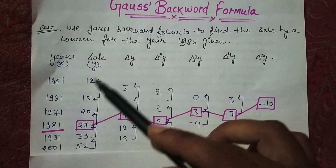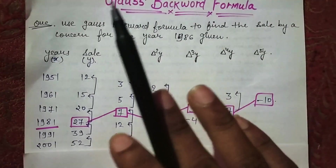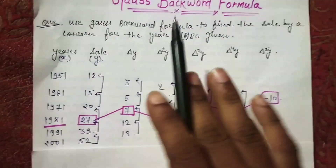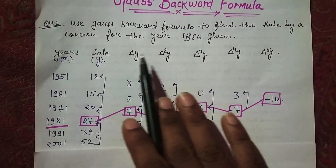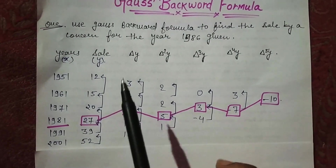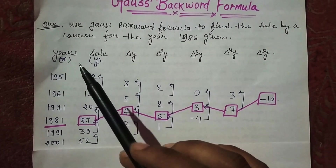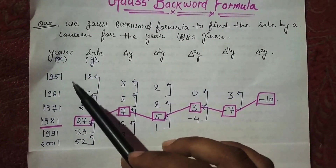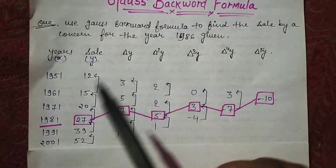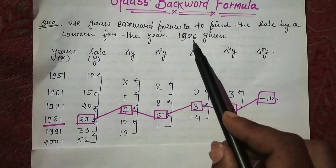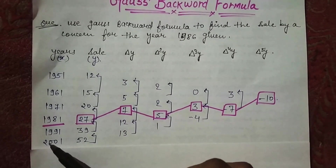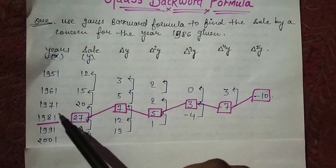You will have a question with direct years and sales values. The whole table I have solved — only these two values (years and sales) will be given to you. Years and sales are given from 1986. These are the values given for our years.